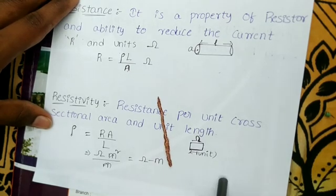Okay friends, those are the different basic concepts of Resistor, Resistance, Resistivity, Conductor, Conductance, and Conductivity. If you have questions, please leave them in the comment box. Thank you for watching, friends.